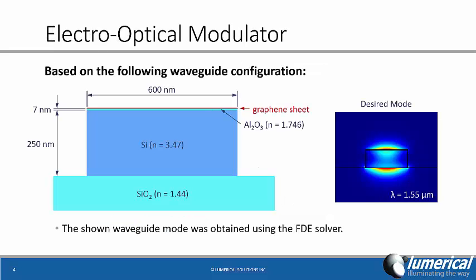Let's consider this electro-optic modulator as an example. We can see the graphene sheet is on the top surface of the waveguide, and we can see the resulting mode profile as calculated by MODE Solutions.